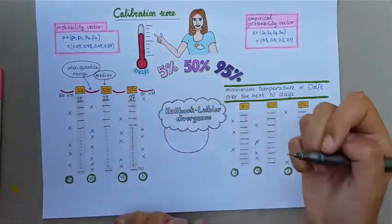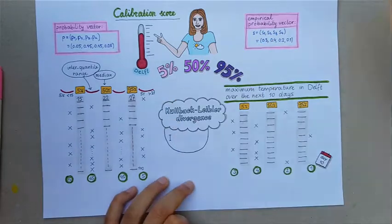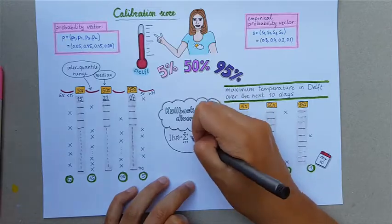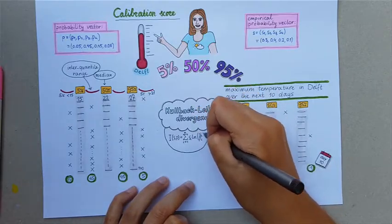It is denoted by I(S, P), which is the sum over i from 1 to N of Si times the logarithm of Si divided by Pi.